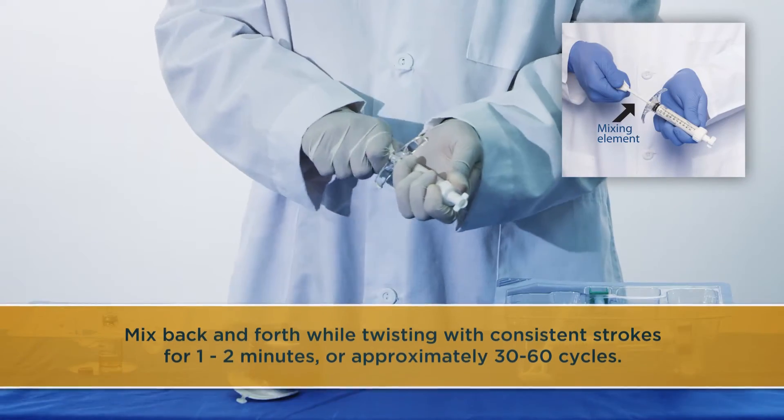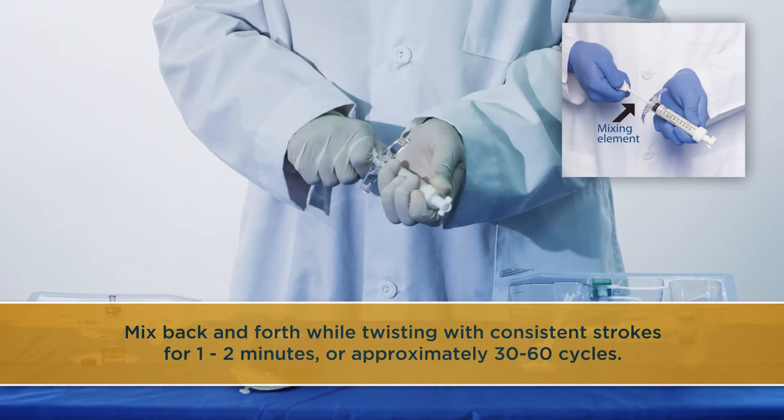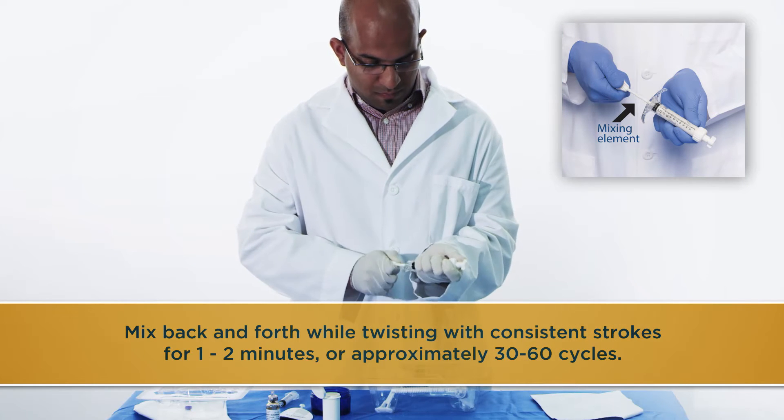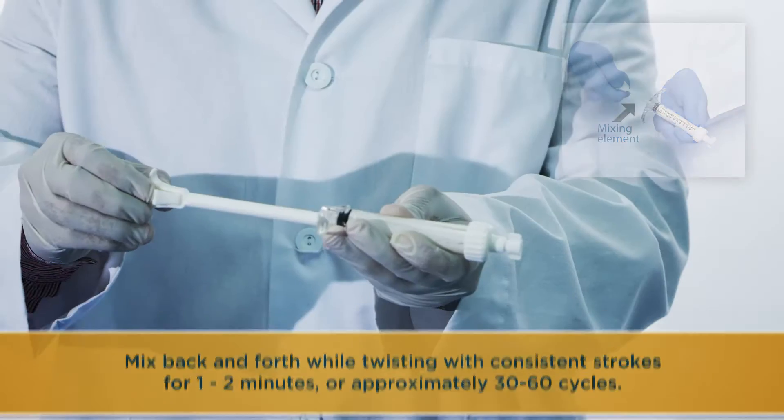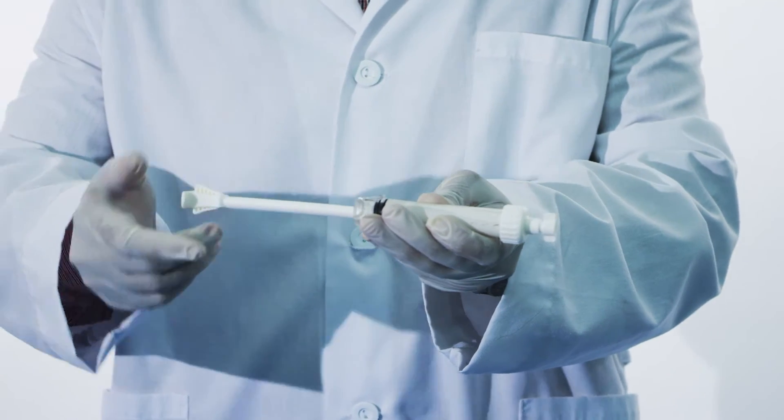Using the mixing element, mix back and forth while twisting with consistent strokes for 1-2 minutes for approximately 30-60 cycles. Material will appear smooth after mixing.